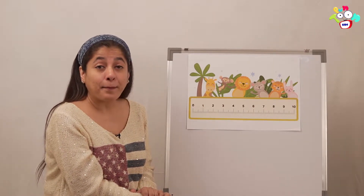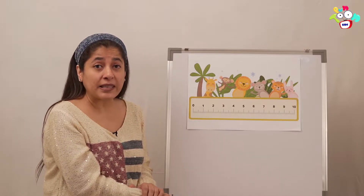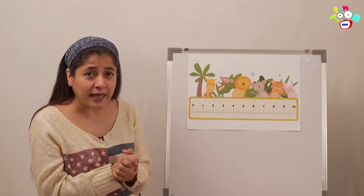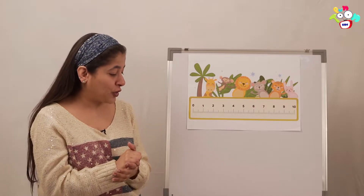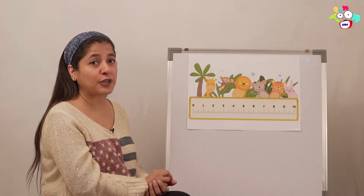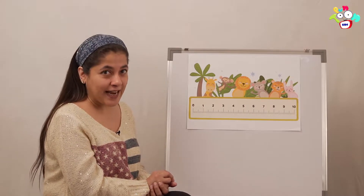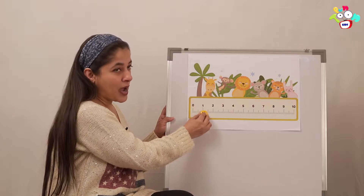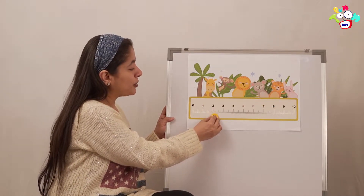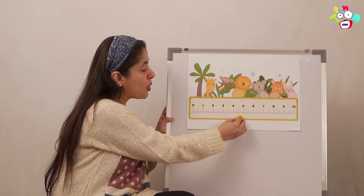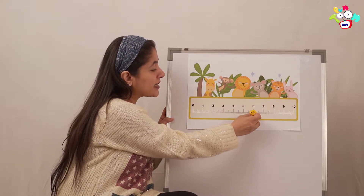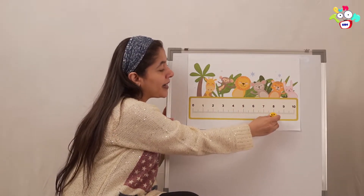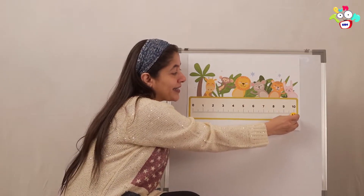What are we going to learn? Missing numbers — that means the numbers which are not there, which are missing. So to do that, we are first going to count till 10. Let's start. Come on: 0, 1, 2, 3, 4, 5, 6, 7, 8, 9, 10.